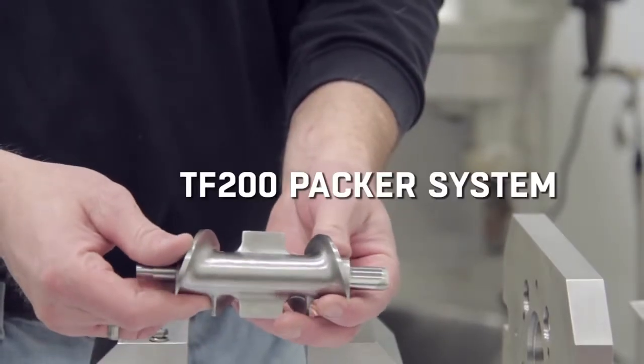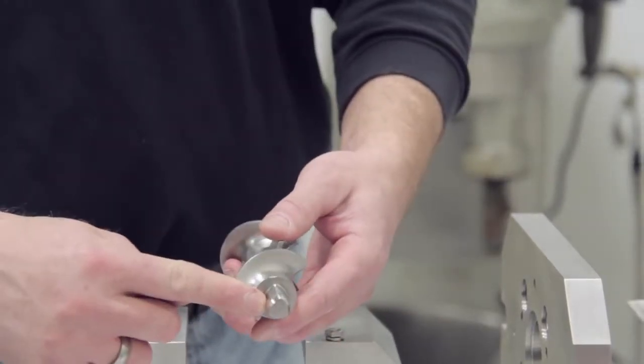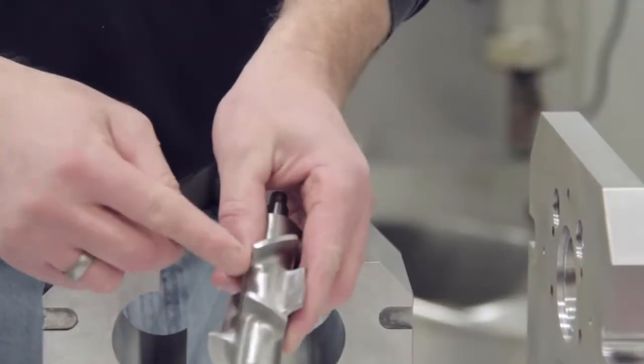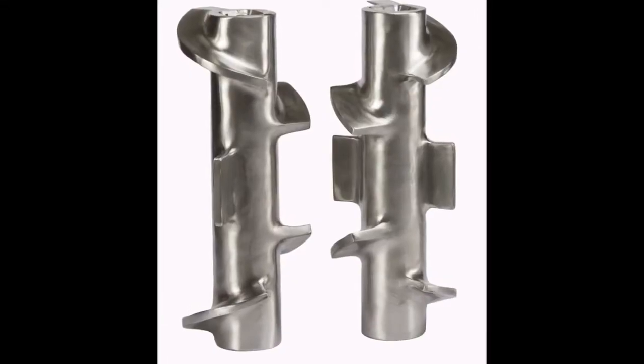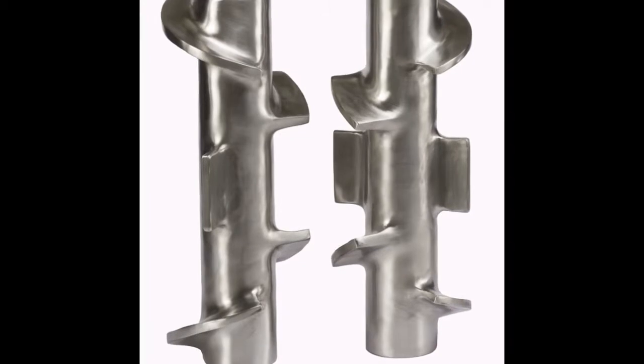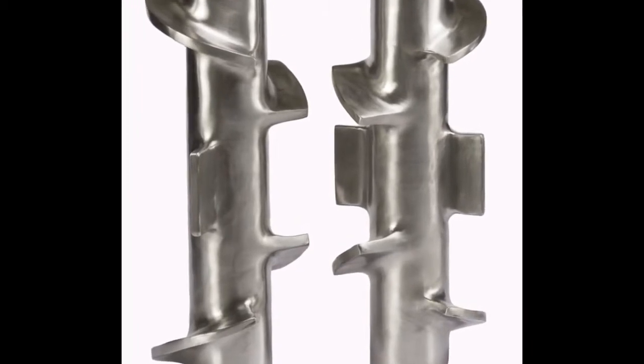This is our TF200 Packer. They're counter rotating. They're designed to pull the material to the center of the hopper for better force feeding of the screw. They're constructed of 17-4 stainless steel.